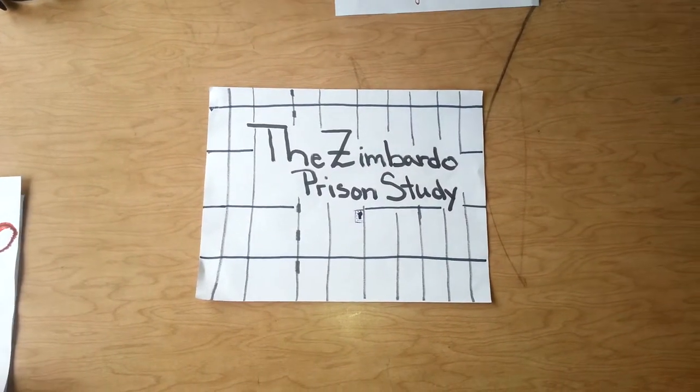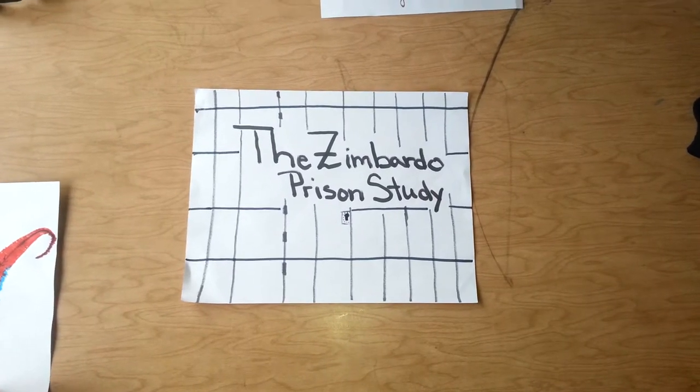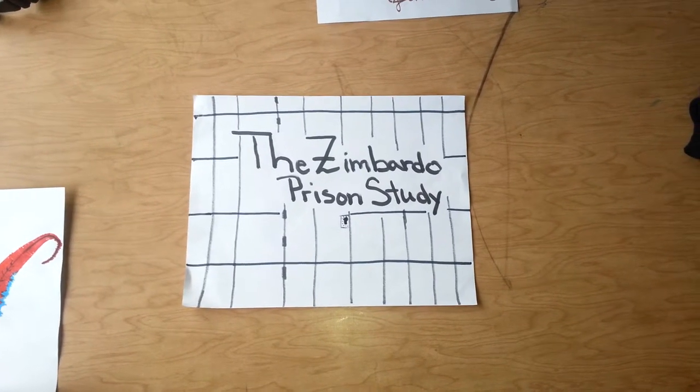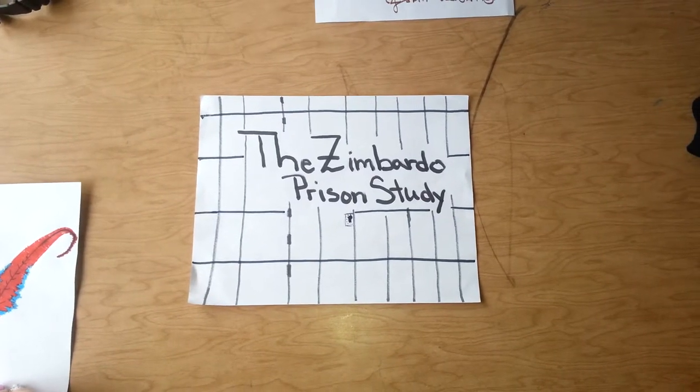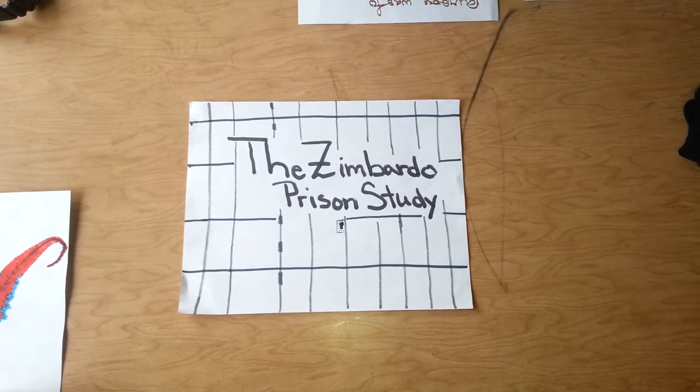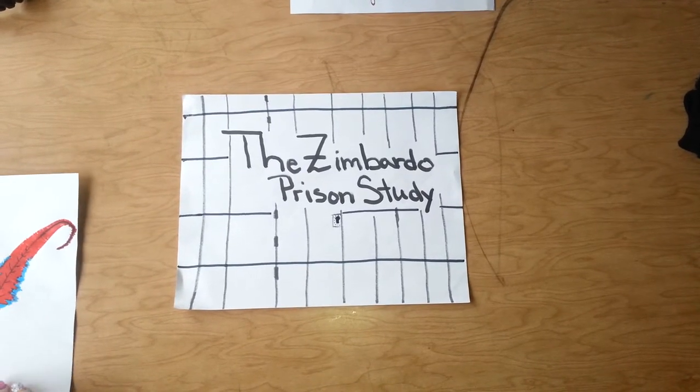The Stanford Prison Experiment was a study of psychological effects of becoming a prisoner or a prison guard. The experiment was conducted at Stanford University from August 14th to August 20th, 1971, by a team of researchers led by psychology professor Philip Zimbardo.